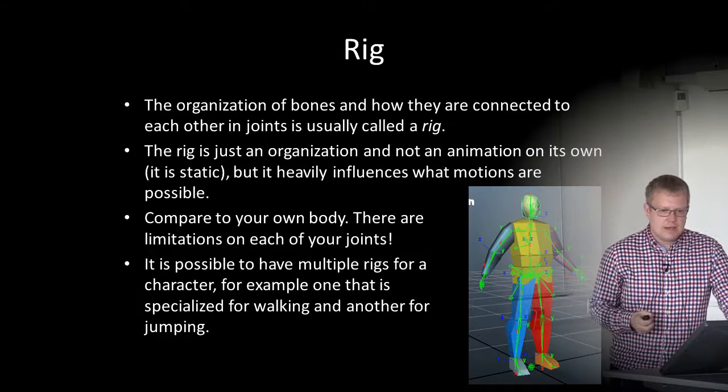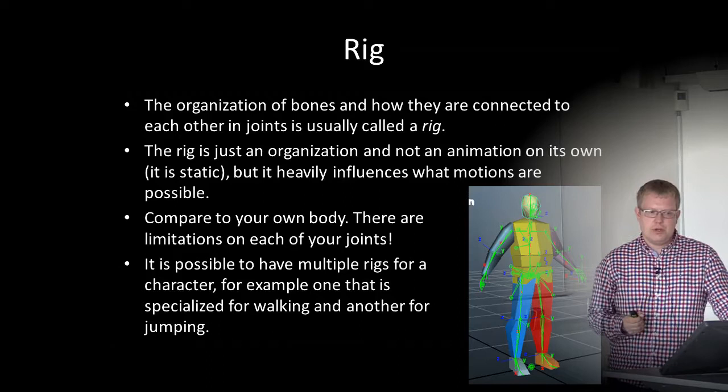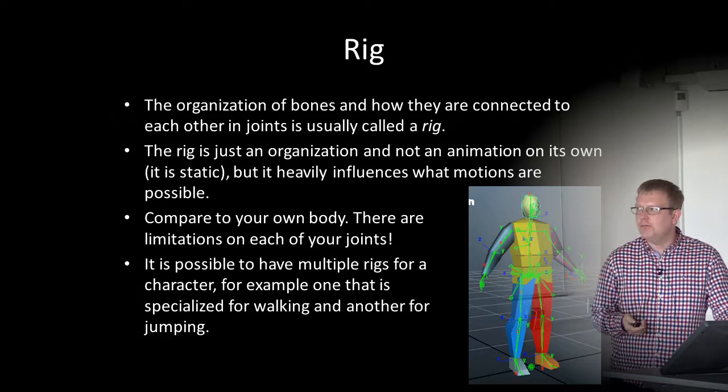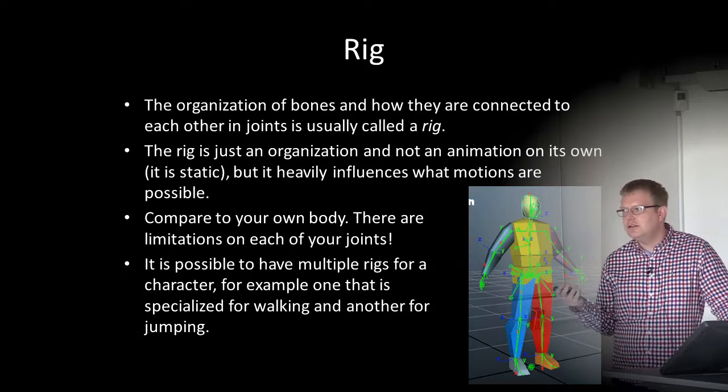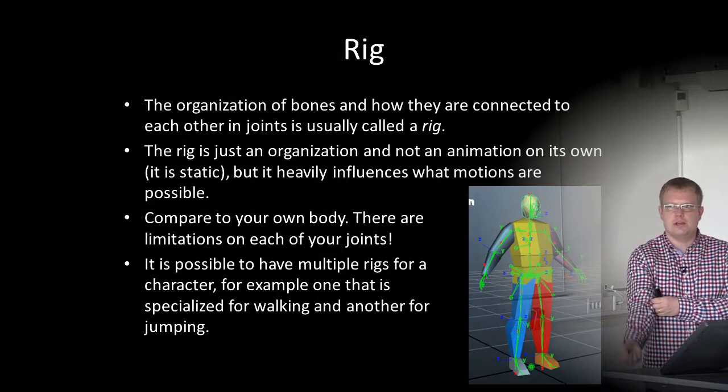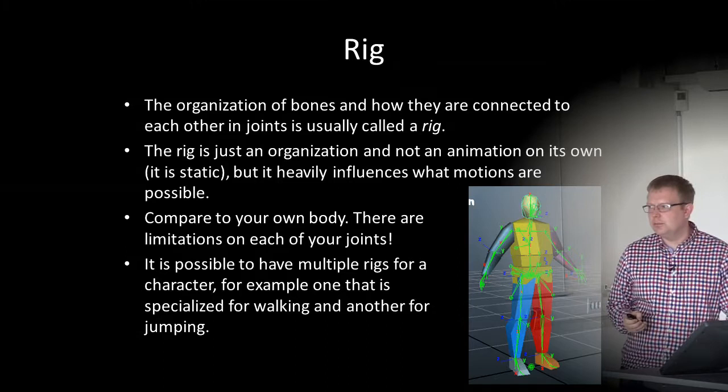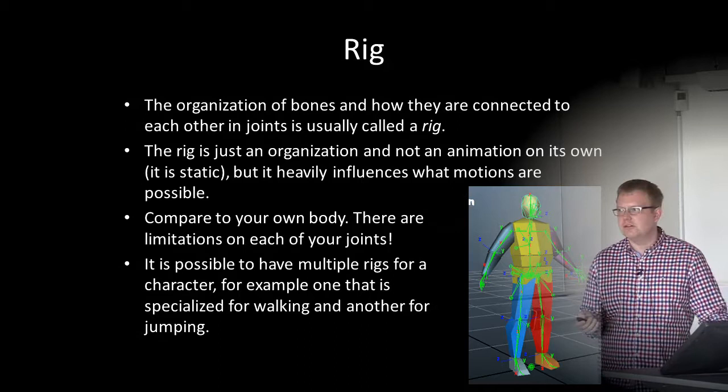The organization of bones and how they connect to each other in joints is usually called a rig or a skeleton. The rig is just an organization and not an animation on its own — it's static, but it heavily influences what motions are possible. Compared to your own body, there are limitations on joints: the shoulder joint can move in many directions but the elbow can only move in one direction. It's also possible to have multiple rigs for a character — one specialized for walking, another for jumping, another for running.